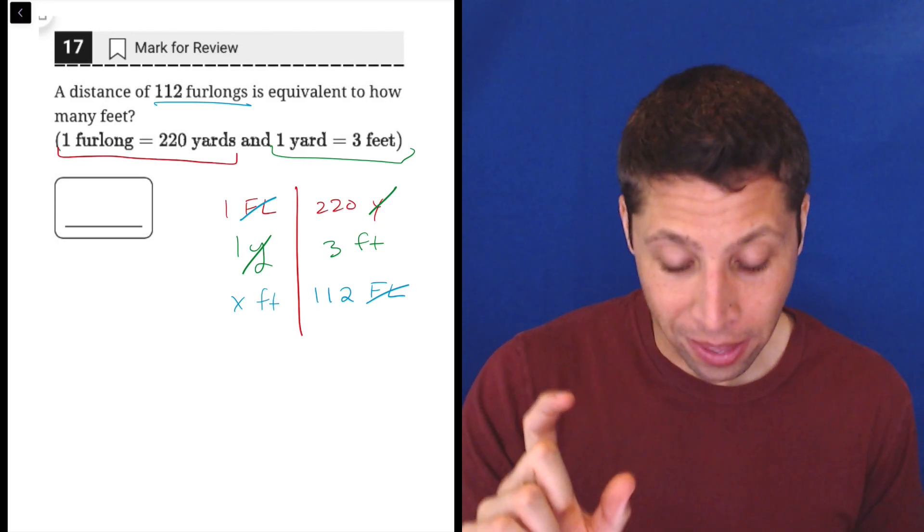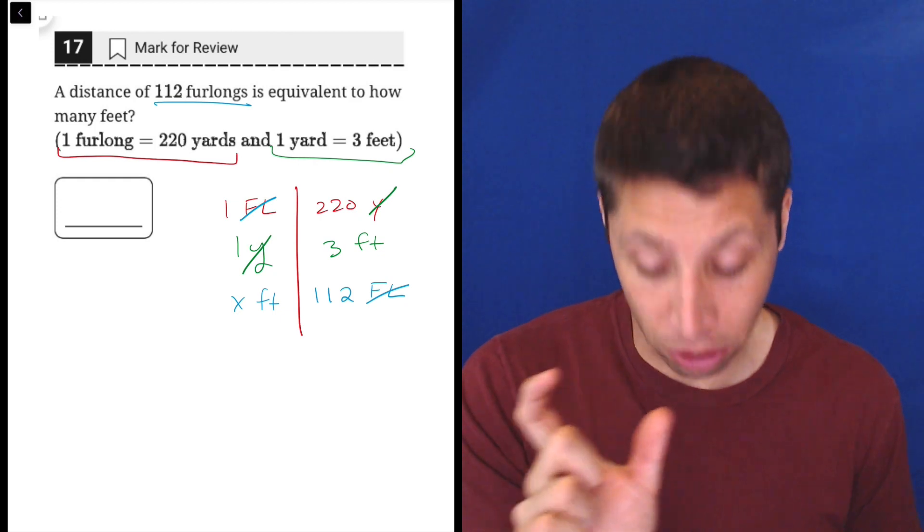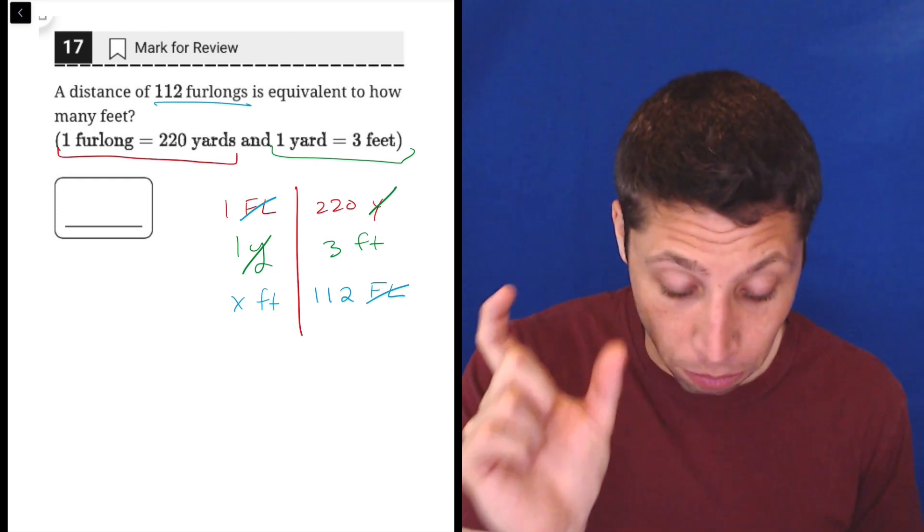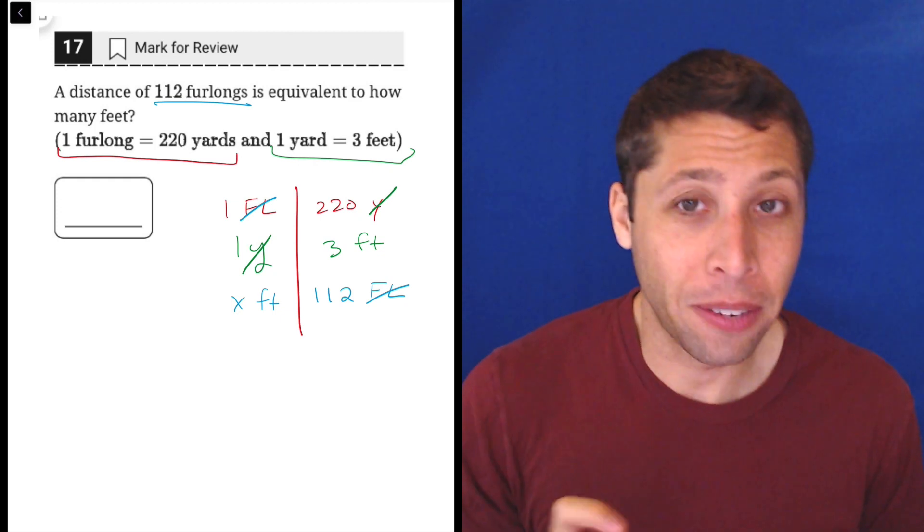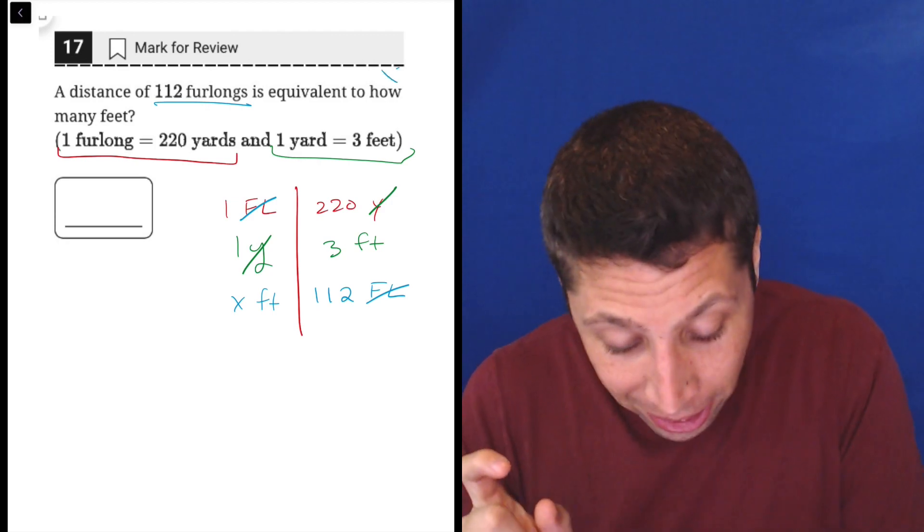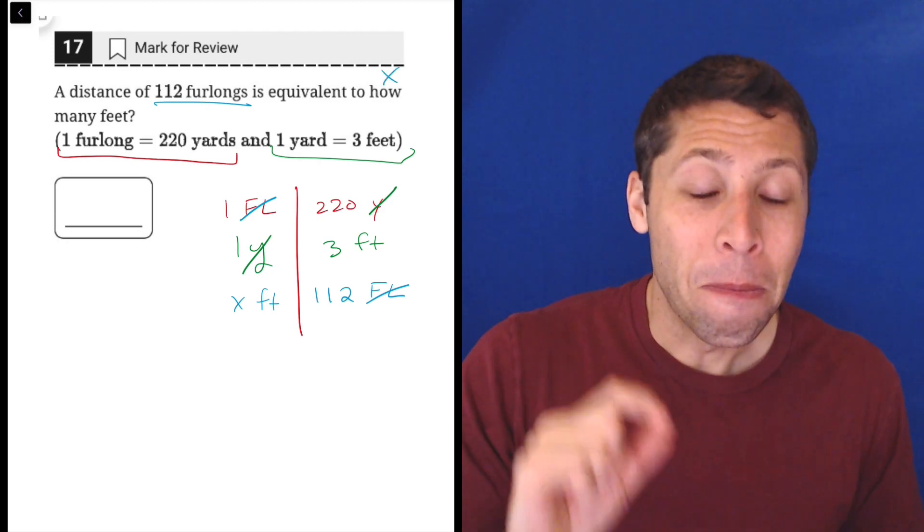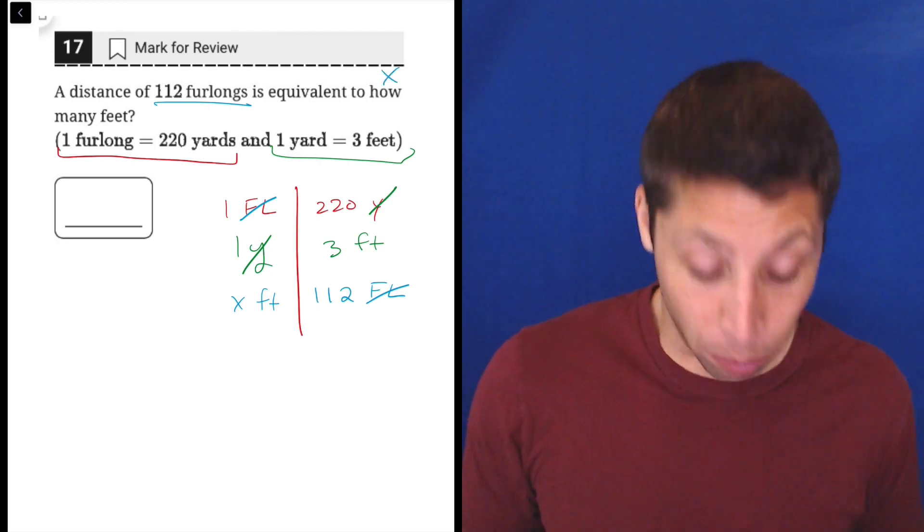And it's X feet. So go back to the question. Right. They really did give us a bit of a unit conversion here. Right. A distance of 112 furlongs is equivalent to how many feet. Right. We don't know it. How many is code for X. But that's a conversion. And that's kind of where we're ending.